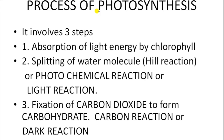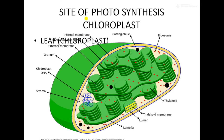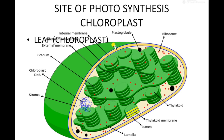Photosynthesis occurs in the chloroplast. Chloroplasts are present in leaves and stems, but the number of chloroplasts is greater in leaves than in stems. The chloroplast is a double membrane structure with an outer membrane and an inner membrane. The inside of the chloroplast is divided into two parts: the grana and the stroma.